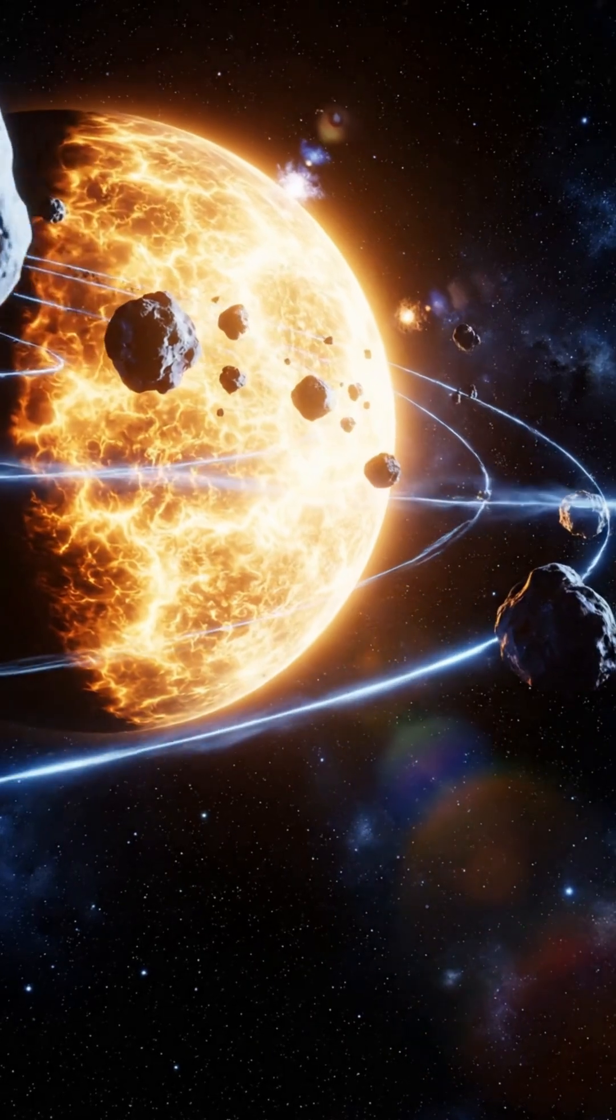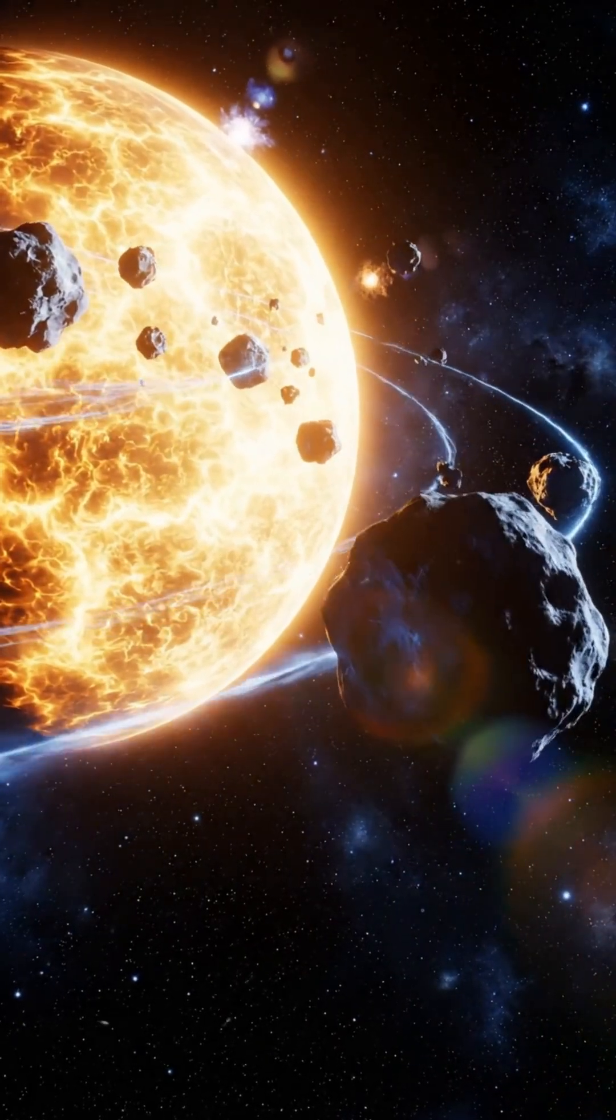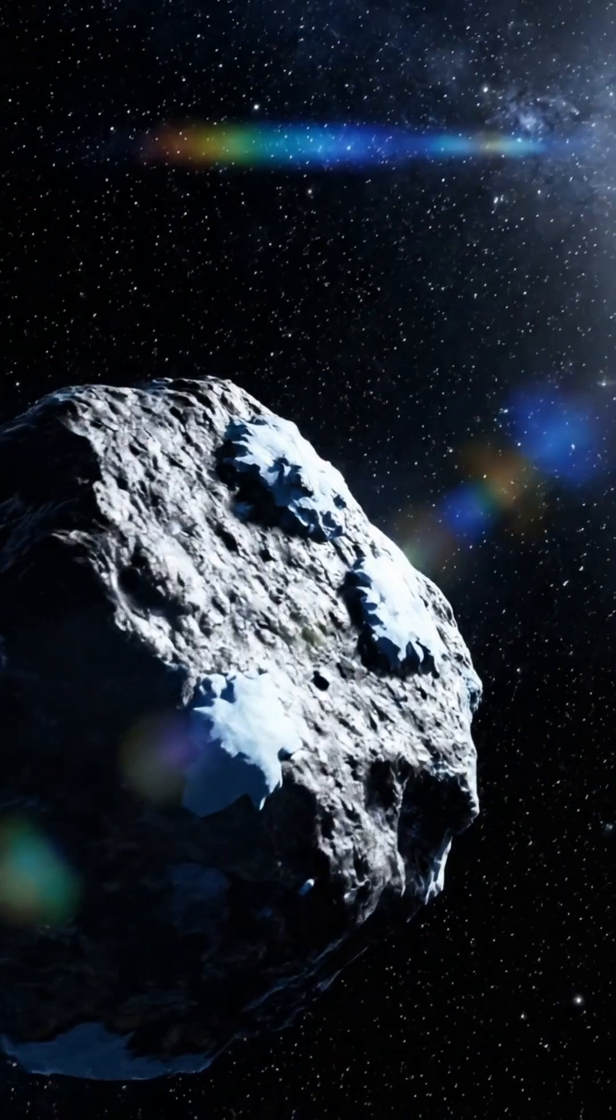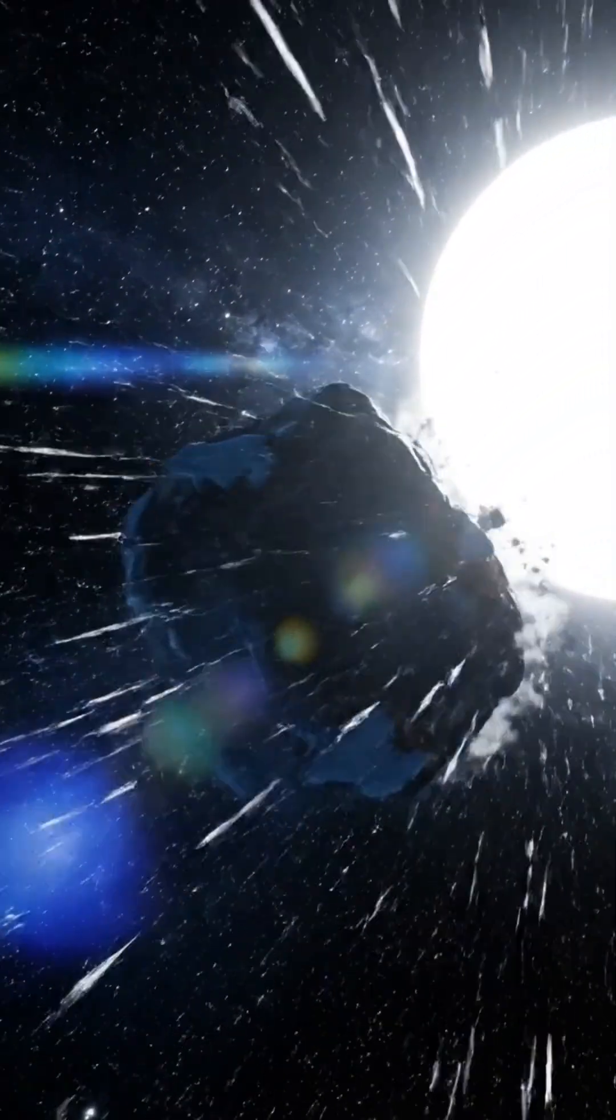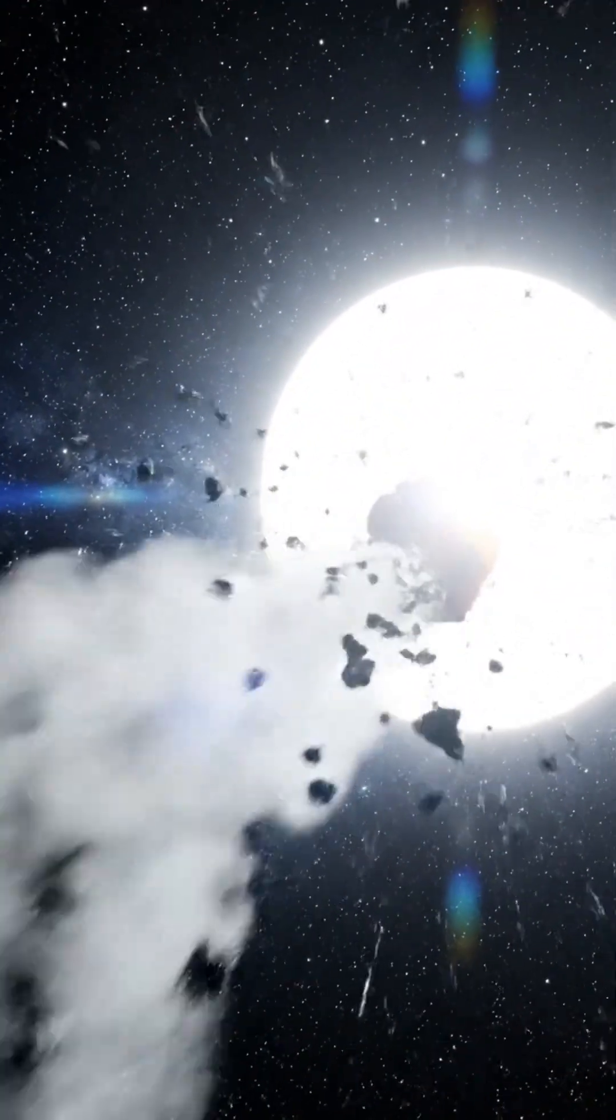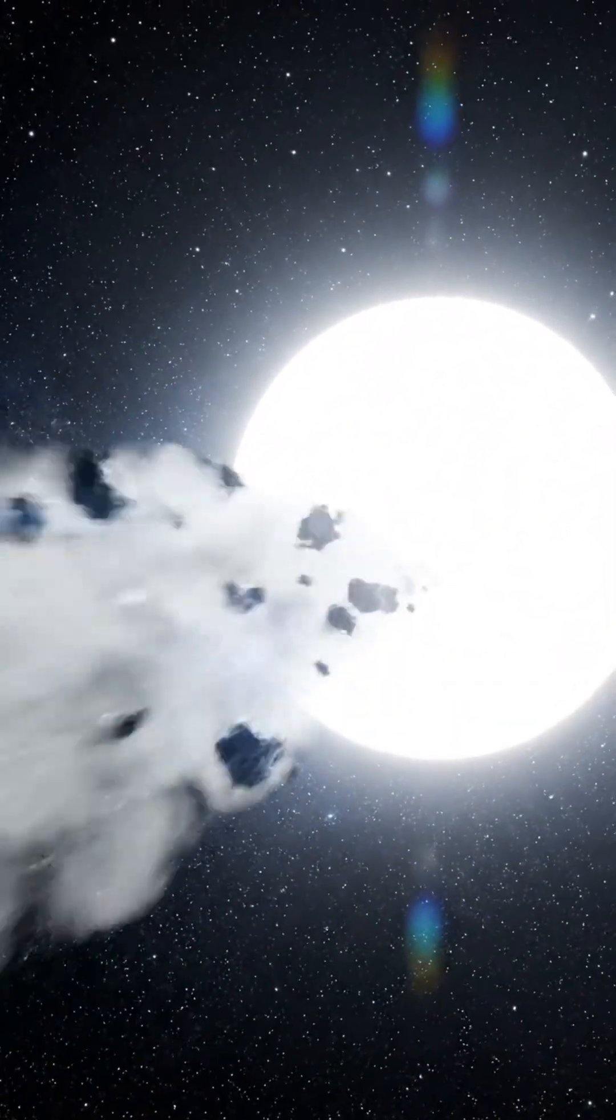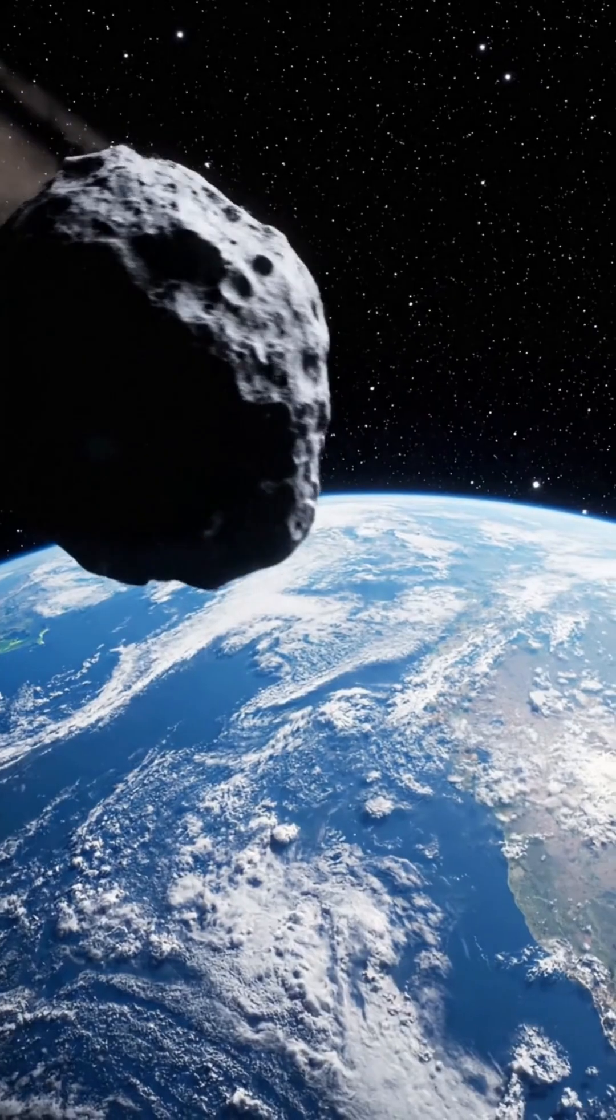These extreme speeds come from the sun's gravity, pulling asteroids into powerful elliptical paths. The closer they swing to the sun, the faster they accelerate, just like a roller coaster hitting its highest point of speed. So next time you hear about an asteroid passing Earth,